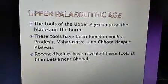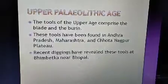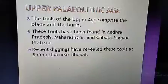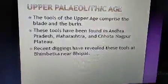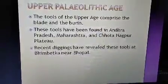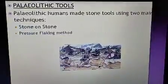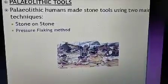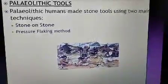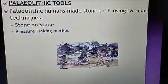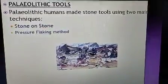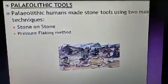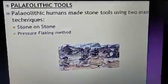In the upper paleolithic age, the most important tools were the blade and burin, mostly found in Andhra Pradesh, Maharashtra, and the Chhota Nagpur Plateau. After discussing the different types of tools, it is important to understand how these tools were made. Early humans used two techniques: the stone on stone method and the pressure flaking method.